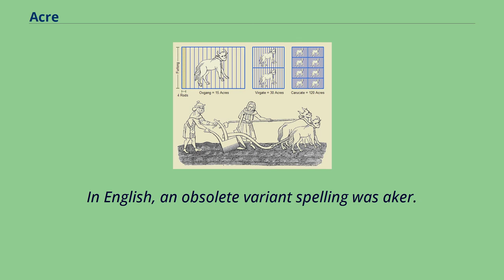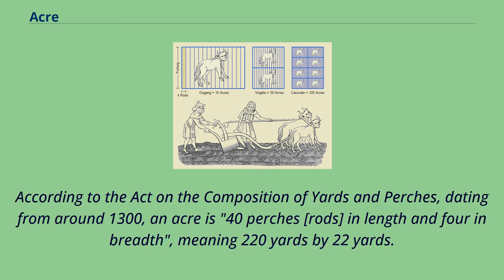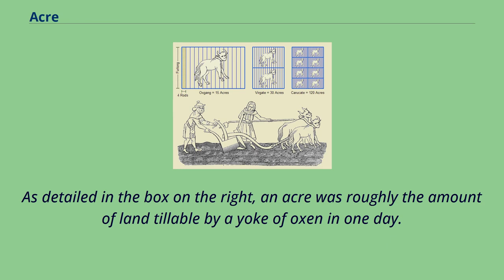According to the Act on the Composition of Yards and Perches, dating from around 1300, an acre is 40 perches (rods) in length and four in breadth, meaning 220 yards by 22 yards. As detailed in the box on the right, an acre was roughly the amount of land tillable by a yoke of oxen in one day.